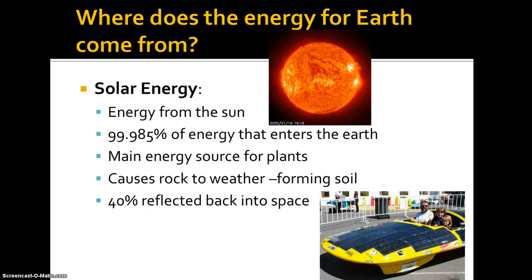Solar energy is the main energy source for plants, which puts energy into the biosphere — very important for producers and consumers. Solar energy is also the primary cause of weathering rock and forming soil, which is not something you really think about. For example, the sun warming pavement makes it expand. When the pavement contracts due to cooling or less sun in winter, the difference between expansion and contraction actually breaks it up and forms smaller particles. The sun is also responsible for weather in the atmosphere.